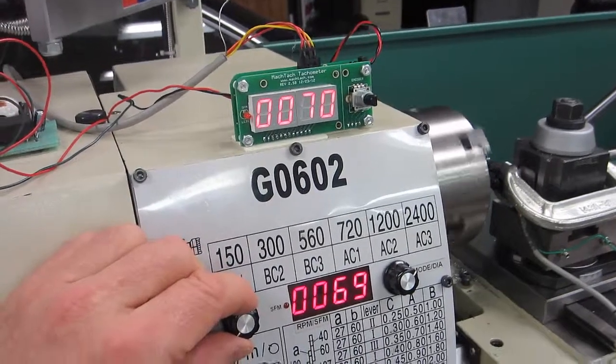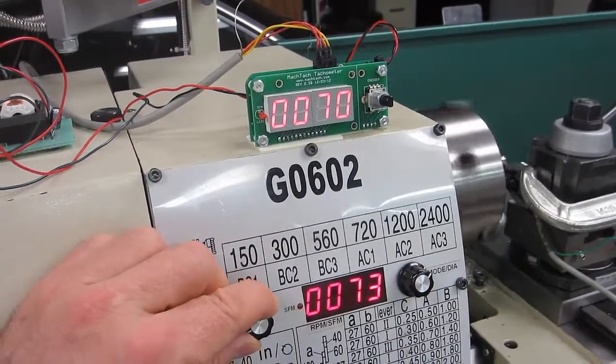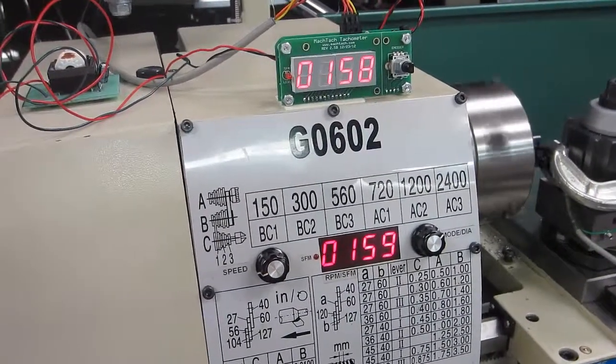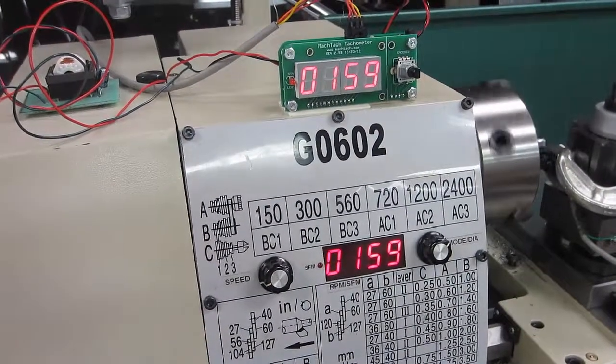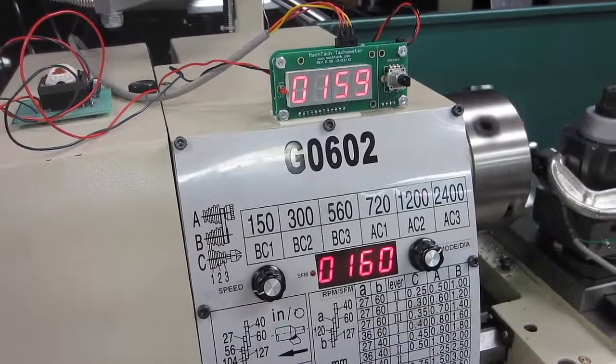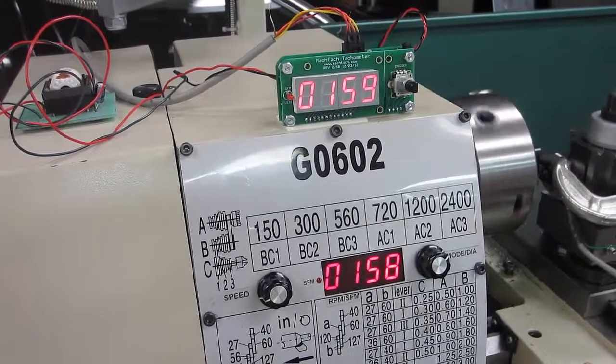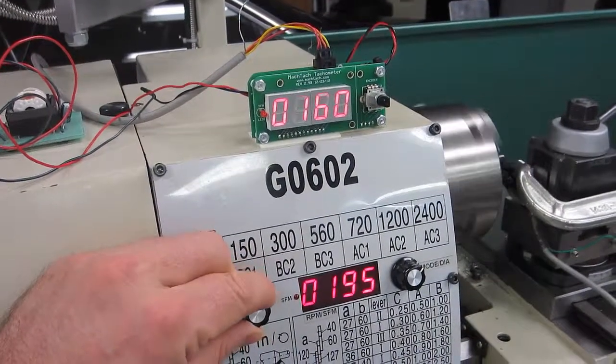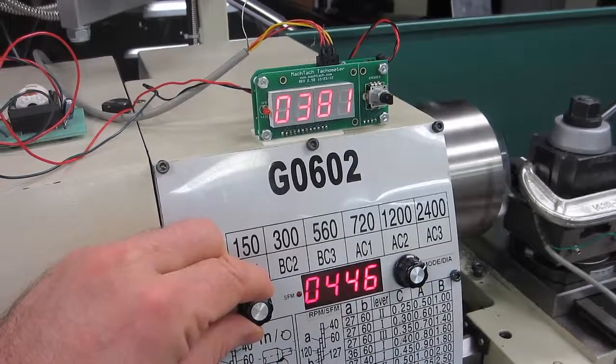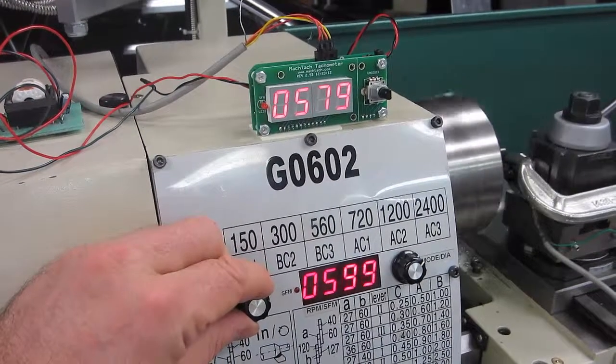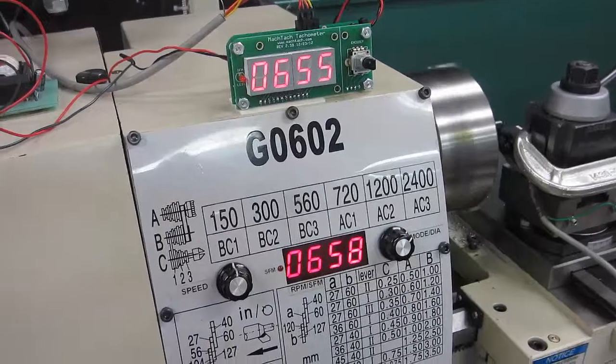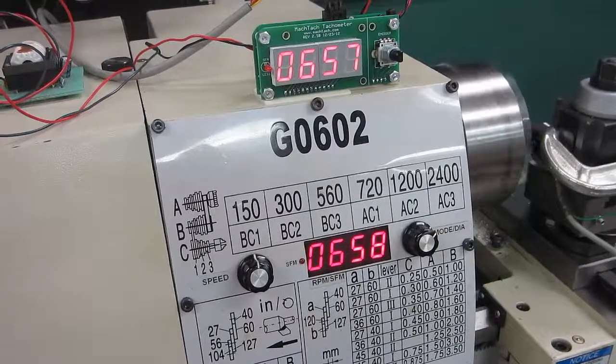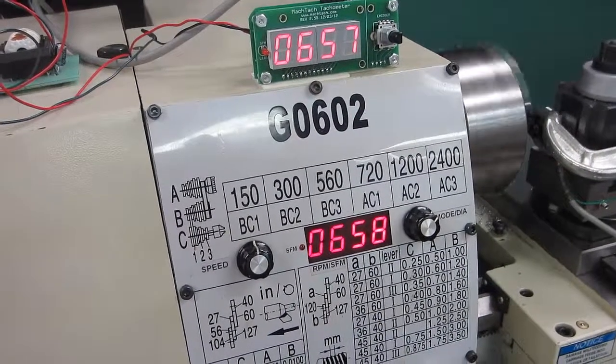So let's go ahead and start speeding this up. Okay, so we're at about 158, 159 RPM right there and you can see both displays are pretty much the same. So I'll go ahead and run this up. We'll run it up to high speed here. So there we have 657 RPM or 658 depending which display you look at.